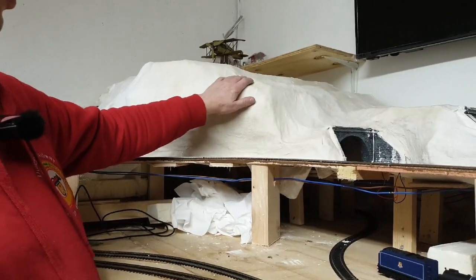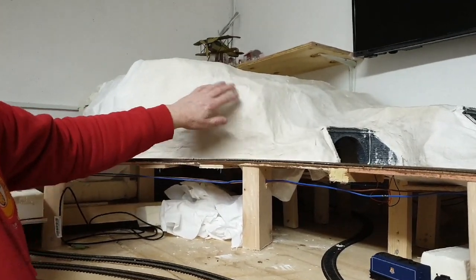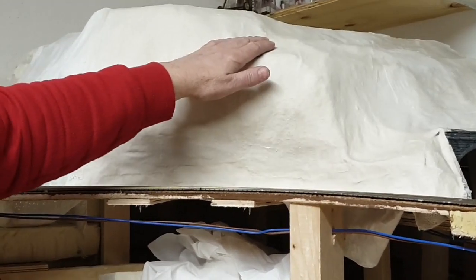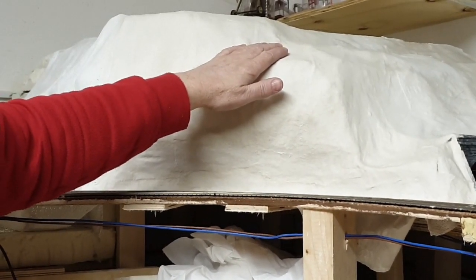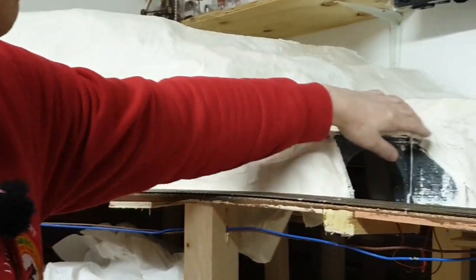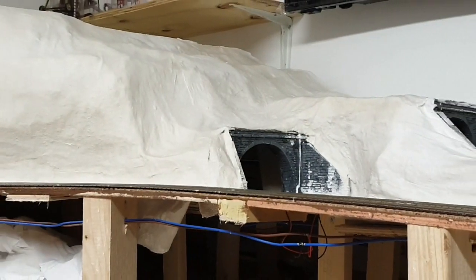You can see now I've put the plaster wash over, it's filled in all the little holes, it's smoothed out the edges between the joins and the cloth. Need to do a bit of a clean up around the tunnel portals where some of it's ran down and dripped down onto it.